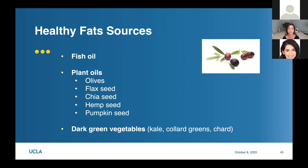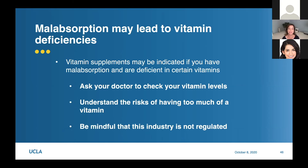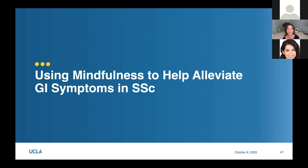Dark green vegetables can also be sources of healthy fats. Vitamin deficiencies can occur in scleroderma, and while some people just take a vitamin supplement, I think it's actually better to have your vitamin levels tested so you take only what you need - taking too much of something can have risks too. The commercial vitamin industry is not regulated, so this is best done with the guidance of a health care provider who can test for deficiencies and guide you on what to take to replete those vitamins.